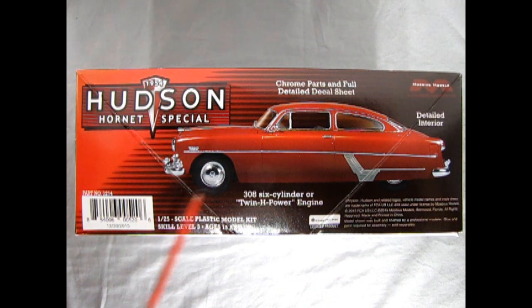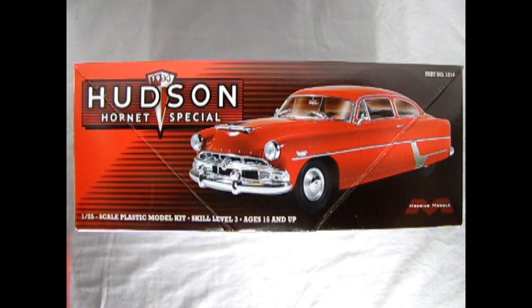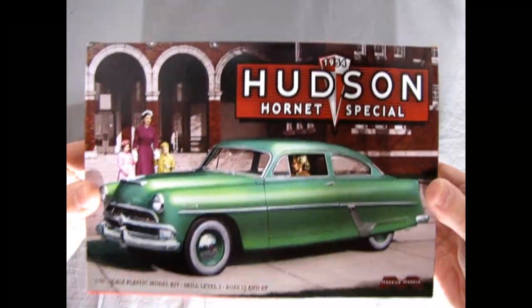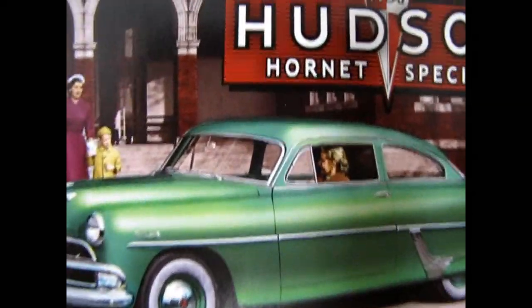The model kit includes chrome plated parts and full detailed decal sheet, detailed interior, and a 308 six-cylinder or twin H power engine. This side of the box features a full build of the 1954 Hudson Hornet Special by Mobius Models. And now let's remove the lid.